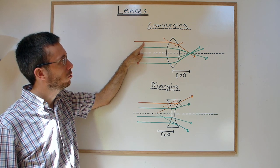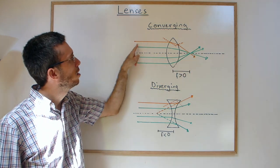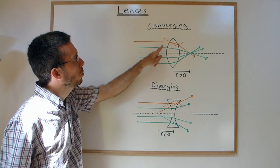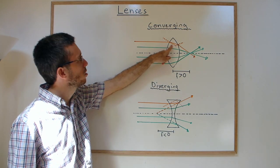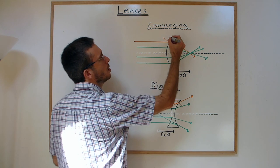When a parallel ray, parallel to the central axis of the lens, touches the first surface of the lens, it will be bent towards the normal according to Snell's law.